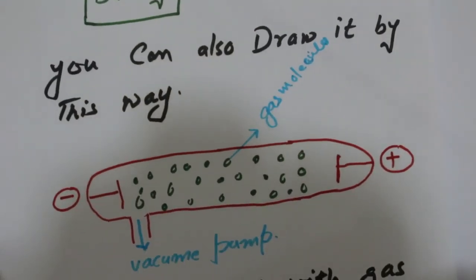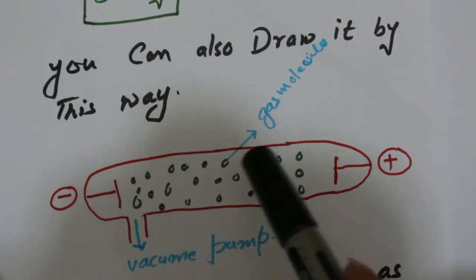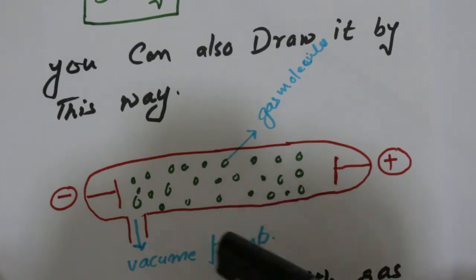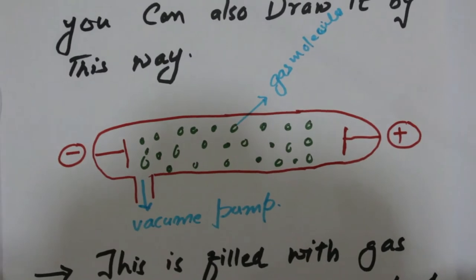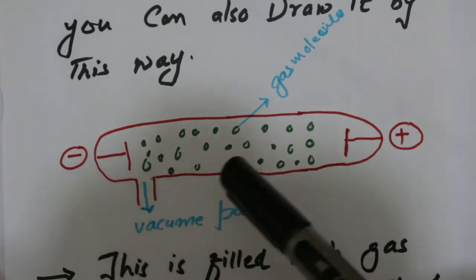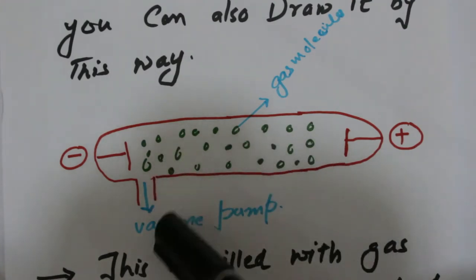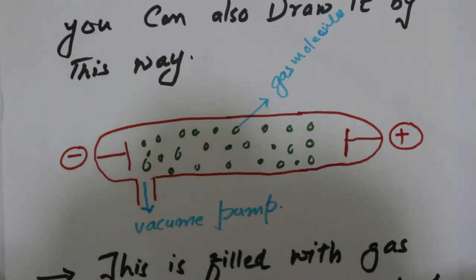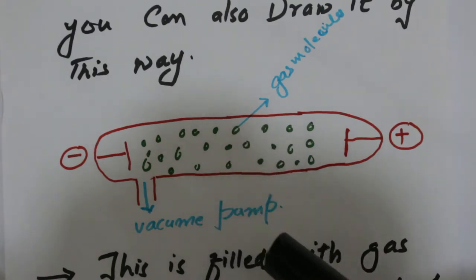You can also draw the discharge tube in this way, which gives more information about it. Here we can see the two electrodes already discussed, and this discharge tube is connected with a vacuum pump. The discharge tube is filled with a particular type of gas molecules.